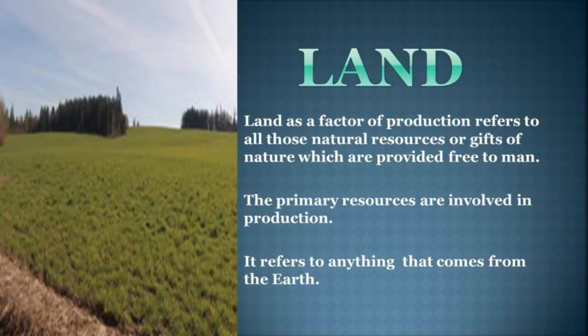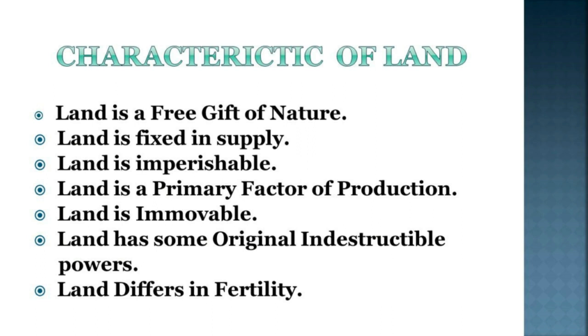Land. Land includes land plus anything that comes from the land. As a factor of production, land refers to all those natural resources or gifts of nature which are provided free to man. The primary resources involved in production refer to anything that comes from the earth. Characteristic of land: land is a free gift of nature, because with the help of land, man has to make efforts to acquire other factors of production. Land is fixed in supply.